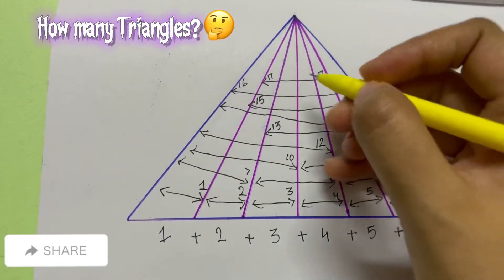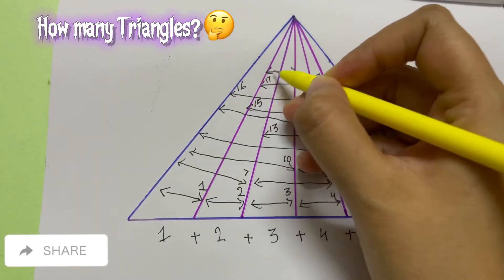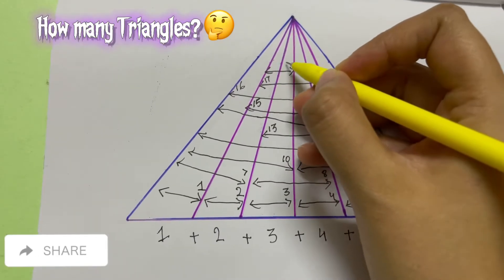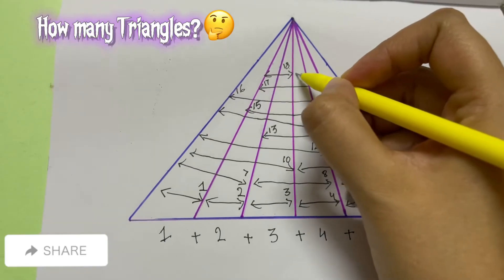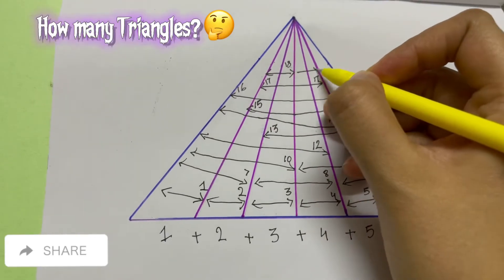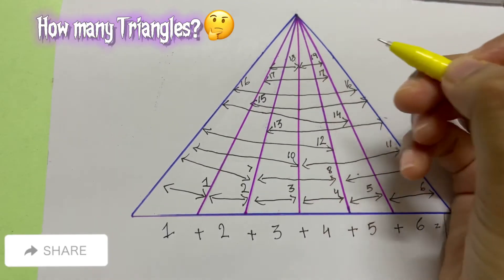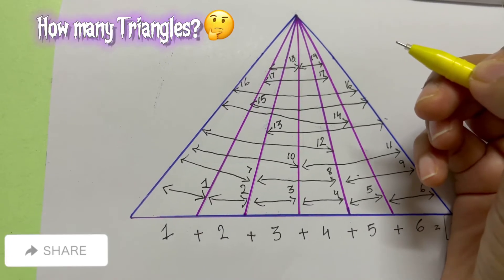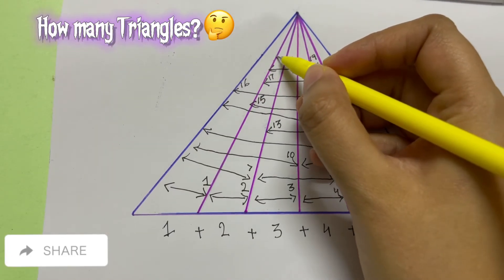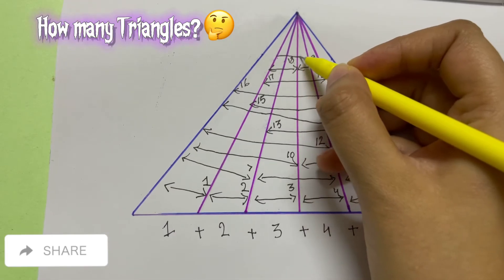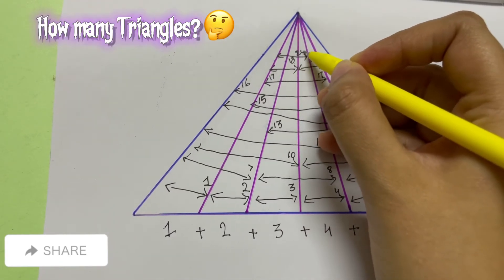And then I will have the eighteenth triangle — I will just join these two triangles together to make the eighteenth triangle. And then these two triangles together make the nineteenth triangle. And then I will have a twentieth triangle here — one, two, three. This is my twentieth triangle.